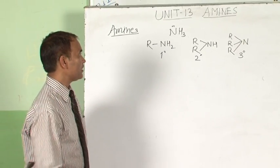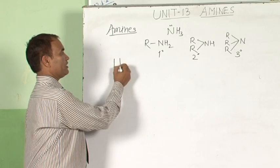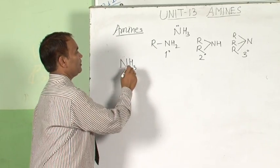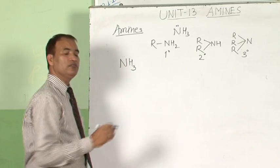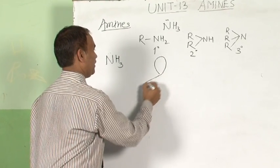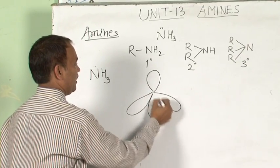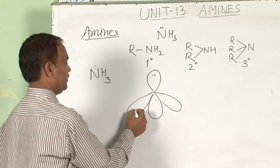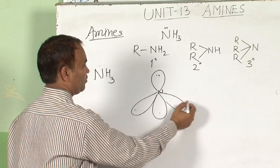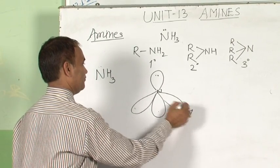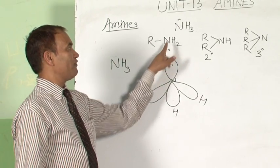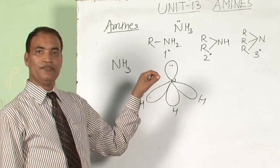Now, what is the structure of amine? We know the structure of ammonia. In ammonia, the nitrogen is sp3 hybridized — one hybrid orbital having a lone pair of electrons and three hybrid orbitals overlapped by the alkyl group or hydrogen atoms. So in each amine, there is one lone pair of electrons at the nitrogen atom, and that is the cause of its basicity.